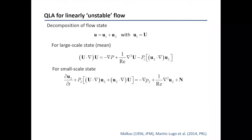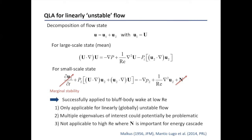One of the most well-known approximations stems from Bill Marcus back in 1950. You decompose the flow field into a mean and fluctuations, get the equation for the larger scale, and get the linearized equation for the small-scale state. What Bill Marcus proposed was for linearly unstable flow, where the small-scale state shows linear instability. You determine the larger-scale state by applying the marginal stability criterion. This technique was applied by a group at EPFL led by François Gallaire, and his student Martin Lugo applied it to bluff-body wake with very promising results at lower Reynolds numbers.